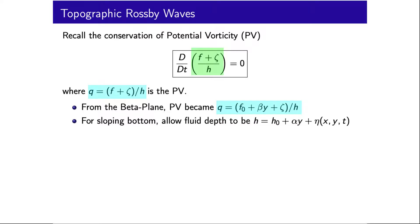We express H as some function of the reference depth H₀ plus some slope factor α times y and η, the free surface height function in x, y and time. This y here is not necessarily latitude, it is the direction of the topographic slope.